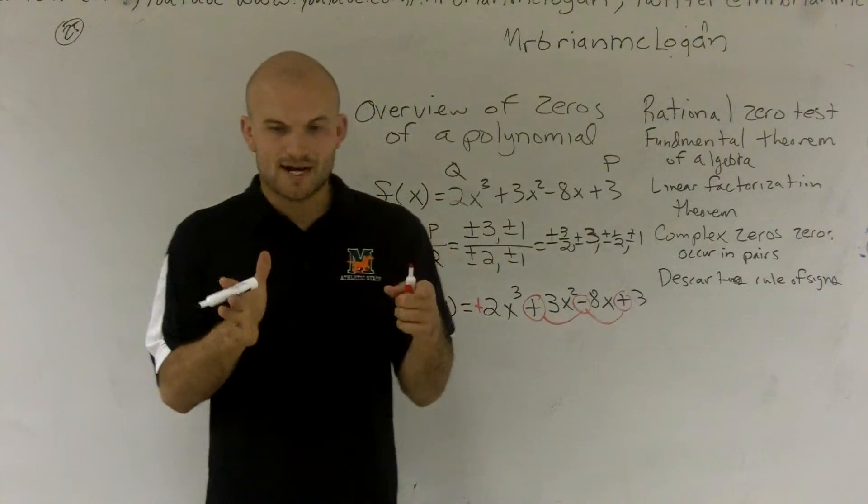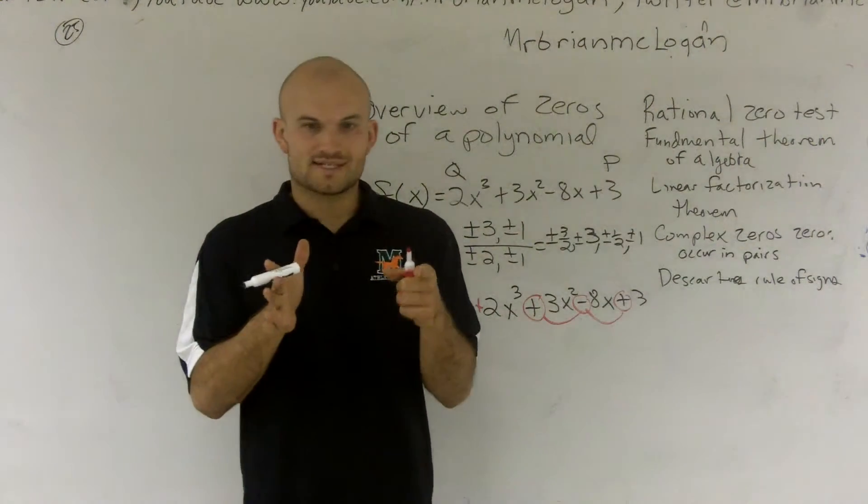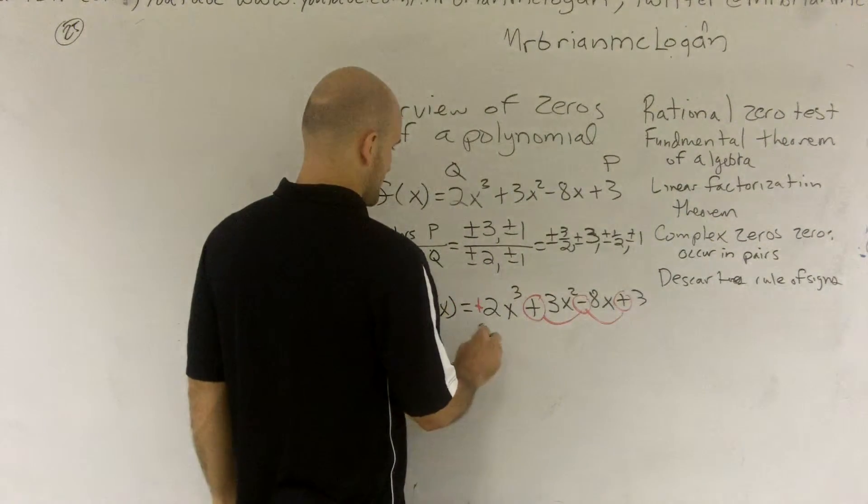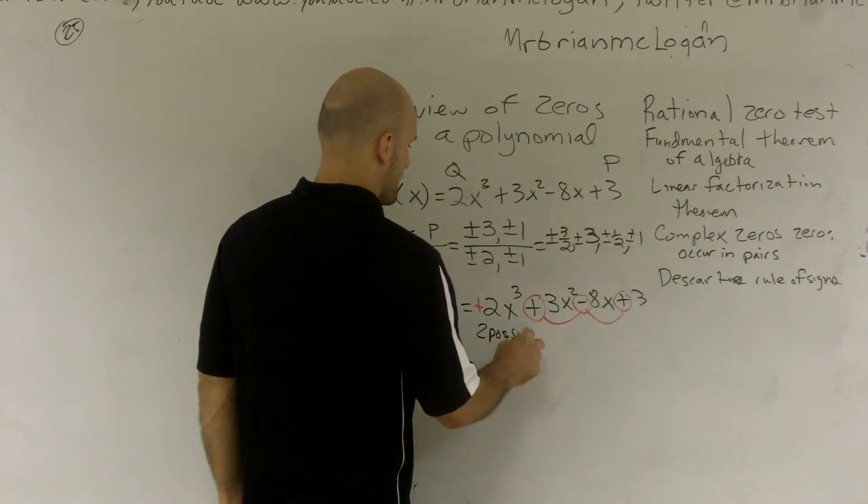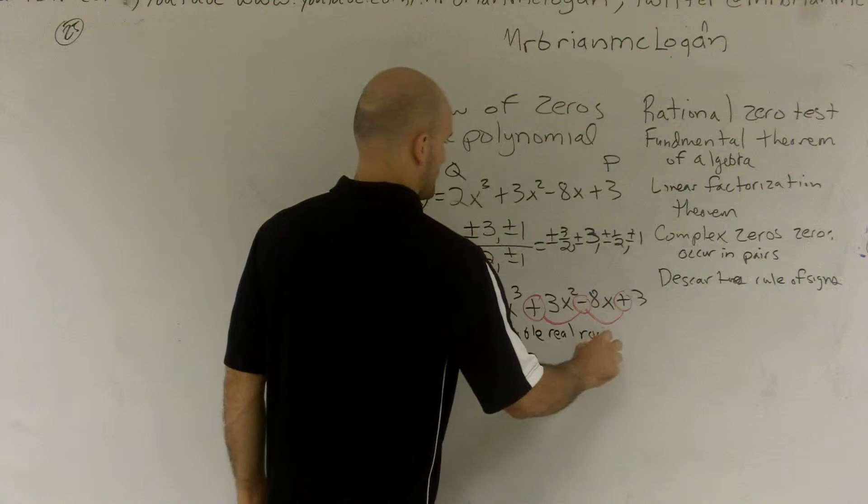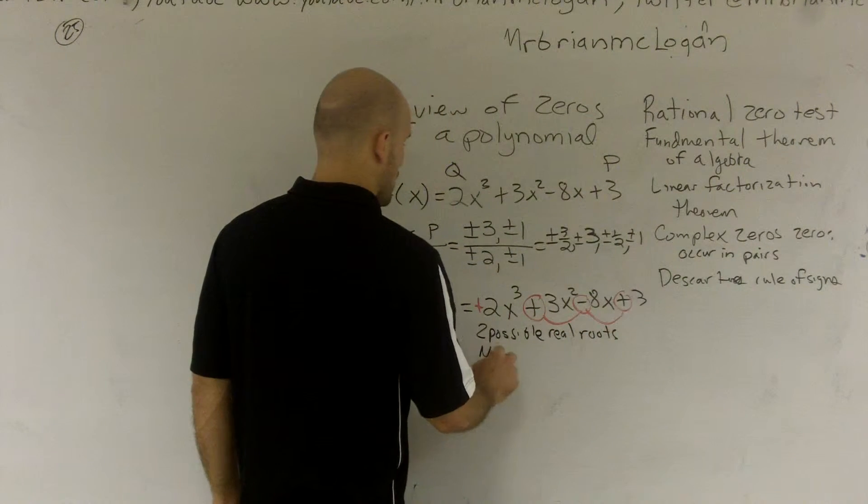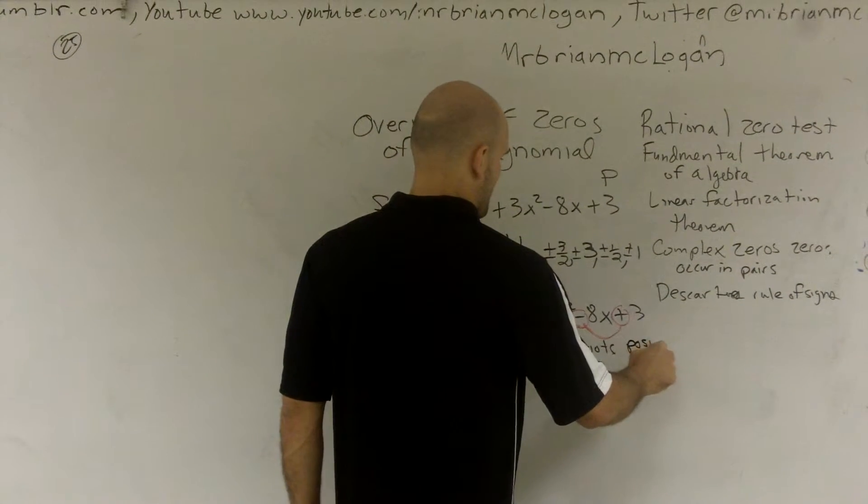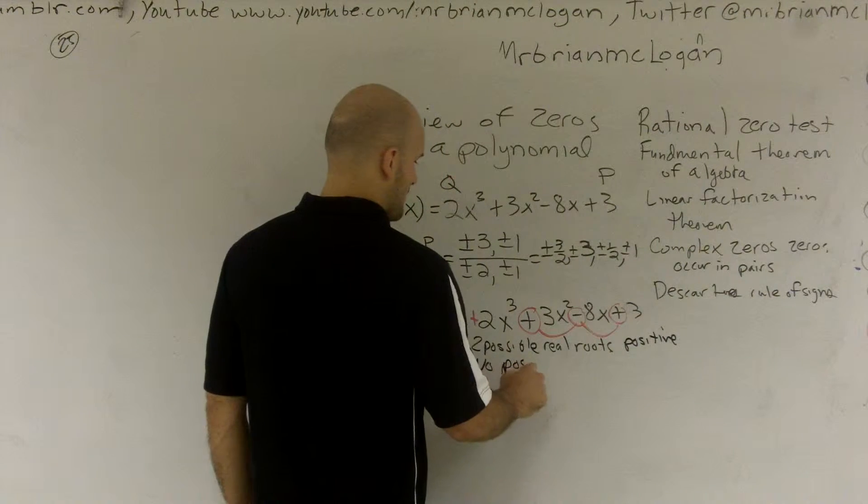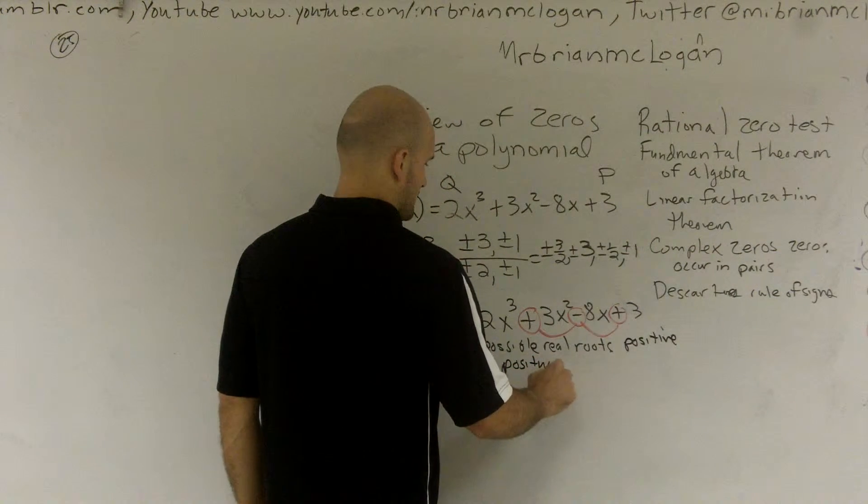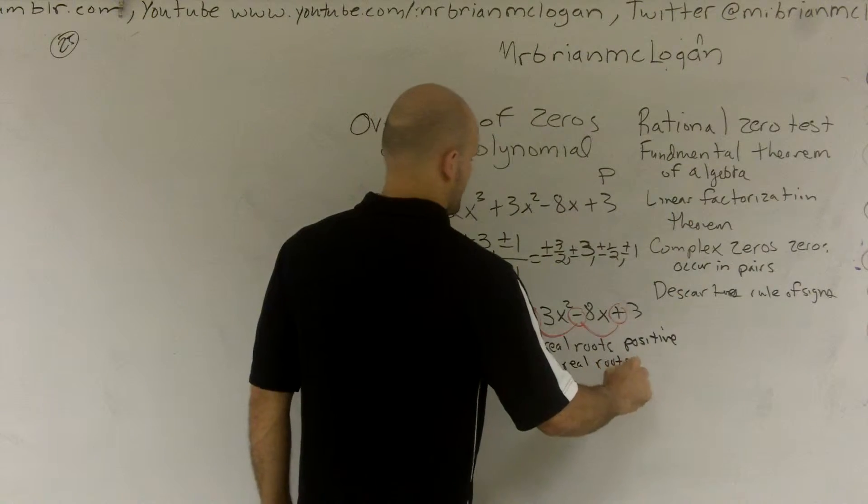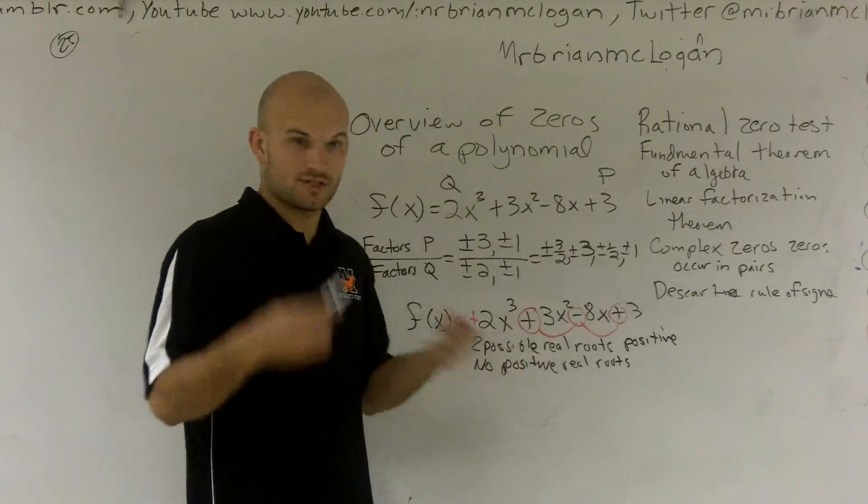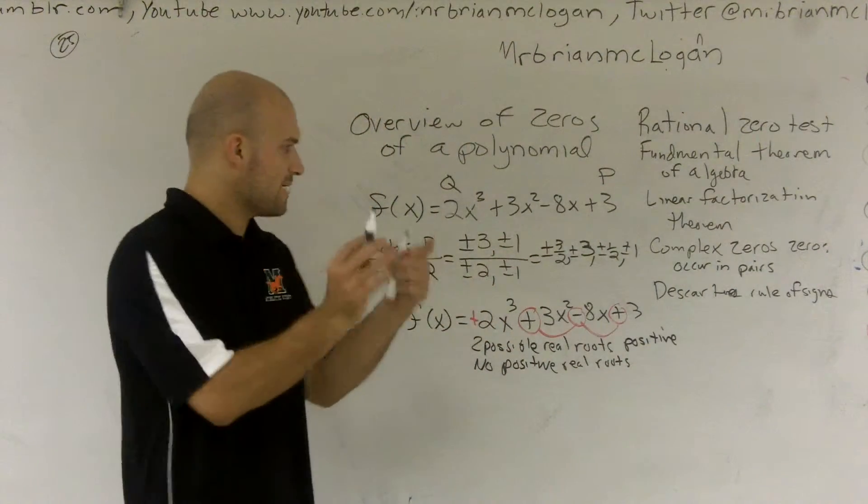Or you subtract by descending by an even number. So it's either 2 possible positive real roots or no positive real roots, because you always descend by an even number.